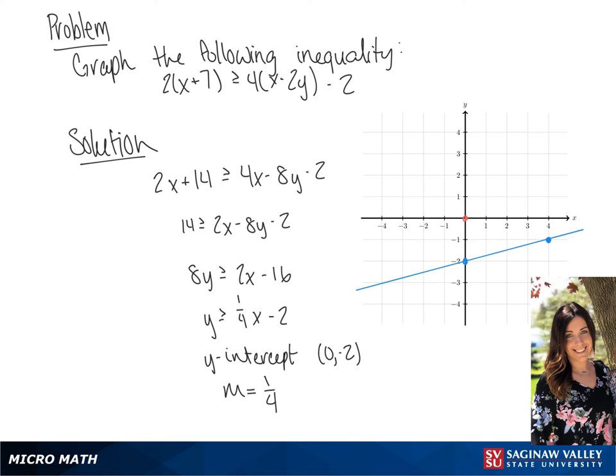Now we're going to test the point on our graph, which is (0, 0), and plug it into the original inequality, giving us 2 times 0 plus 7 is greater than or equal to 4 times 0 minus 2 times 0 minus 2. This gives us 14 is greater than or equal to negative 2, which is true, so we are going to shade the area above the line on our graph.